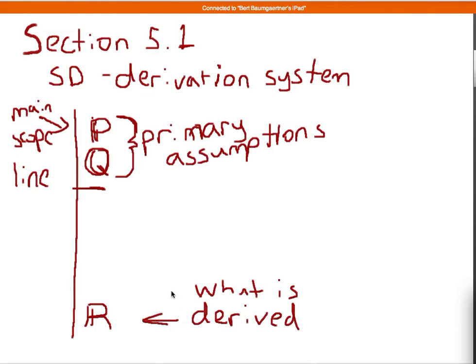So that's the last line. And the whole thing we call the derivation. And the way we get from the primary assumptions to what is derived, we're going to be using certain rules of SD. And the important part of these rules is that they're going to be truth-preserving rules.